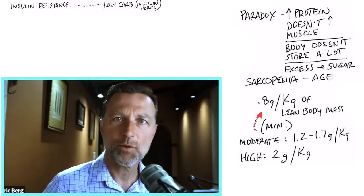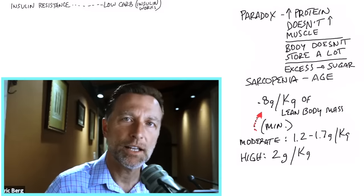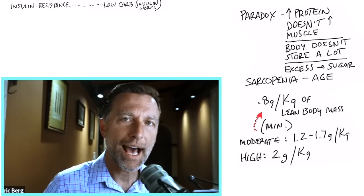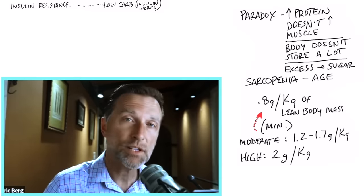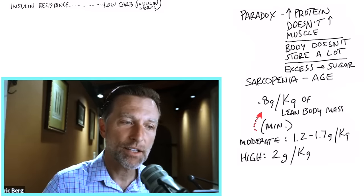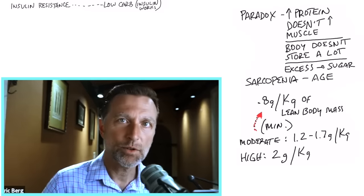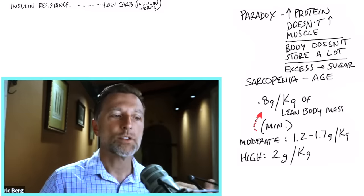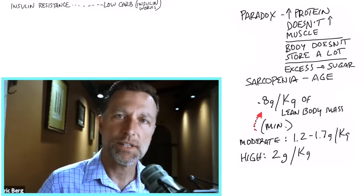So how does that affect your muscles? Well, guess what? You need insulin to absorb amino acids. So the more insulin resistance you have, the less ability you're going to be able to use these proteins for your own muscles. So that's barrier number one, insulin resistance.